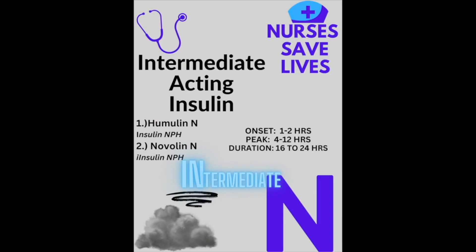The two main intermediate-acting insulins are Humulin N, also called insulin NPH, and Novolin N, also called insulin NPH. The onset is 1 to 2 hours, peak is 4 to 12 hours, and duration is 16 to 24 hours. The trick for memorizing intermediate-acting insulins is that the word 'intermediate' has an N in it — Humulin N, Novolin N, and insulin NPH.